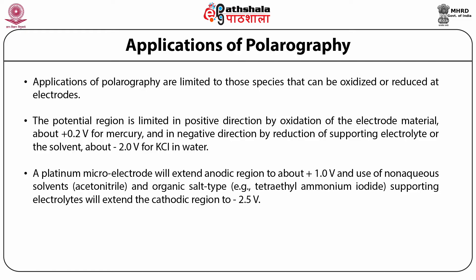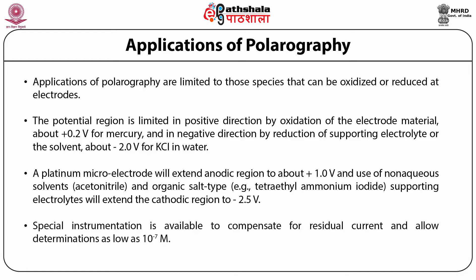One limitation of polarography is that in the positive or anodic range, we cannot study most substances because mercury itself oxidizes and its current adds to the current of the analyte. But on the negative or cathodic side, we can study most substances by polarographic techniques. The optimum concentration range is 10⁻² to 10⁻⁵ molar solution. The upper limit is set by the need for a 100-fold excess of supporting electrolyte, and the lower limit is set by the magnitude of the residual current, which should not exceed the diffusion current. With special instrumentation to compensate for residual current, determinations as low as 10⁻⁷ molar are possible.